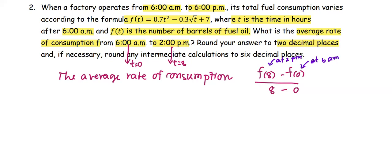Now we're going to find out the function value at 0 and the function value at 8. f(0) = 0.7(0)² - 0.3√0 + 7, which comes out to be 7.